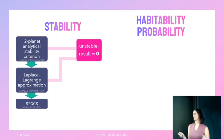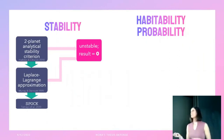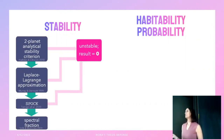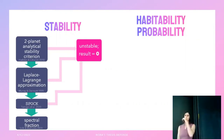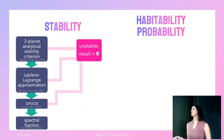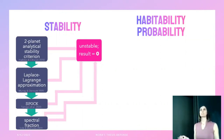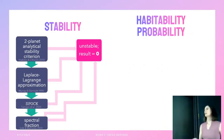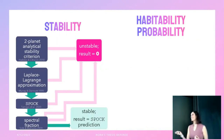If SPOCK gives a non-zero result, the final step is spectral fraction analysis using a five-million-orbit integration to predict stability on five-billion-orbit timescales. This integration might go unstable during the run, or once finished you calculate a spectral fraction — if above a certain threshold the system is unstable; if below, it's stable, and the stability result is set to the SPOCK prediction value. The pipeline is designed to quit as early as possible to save computing time.